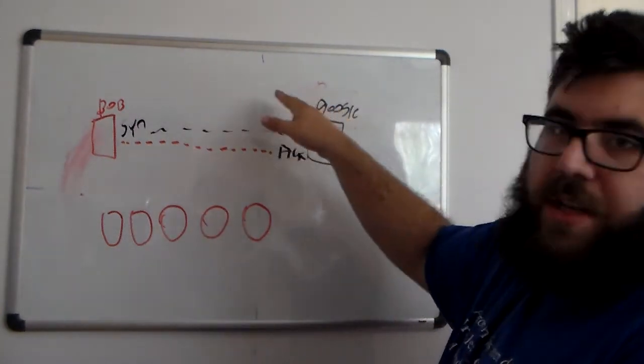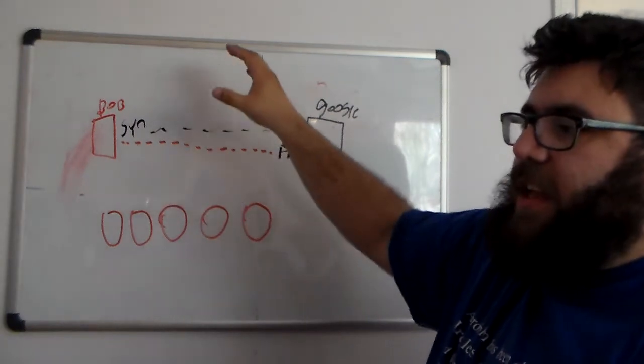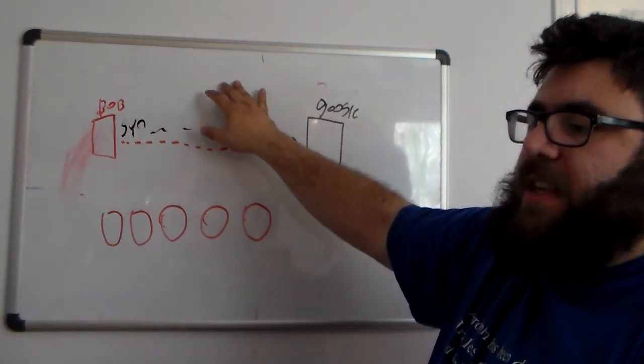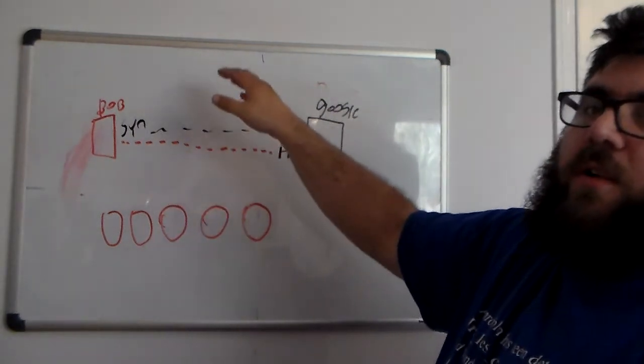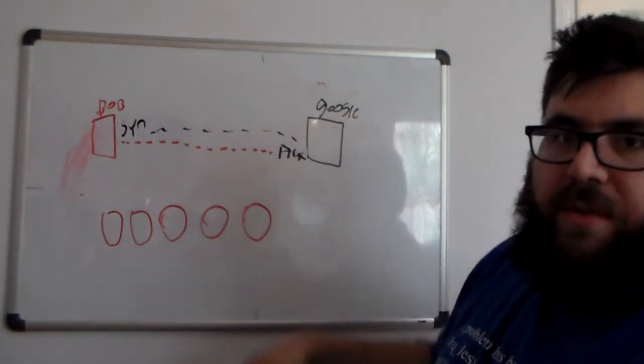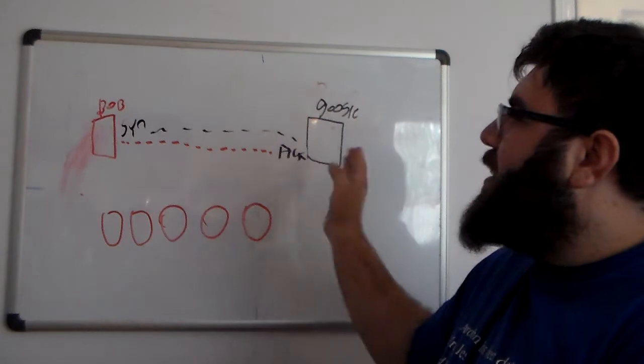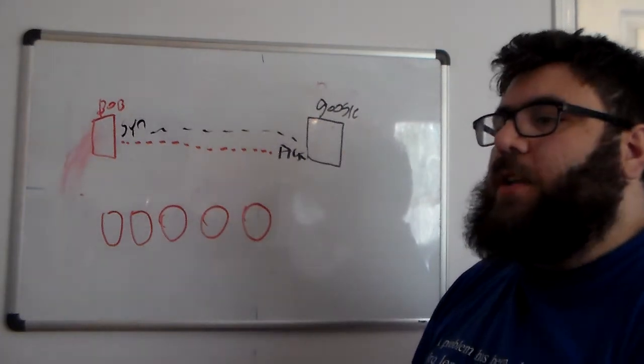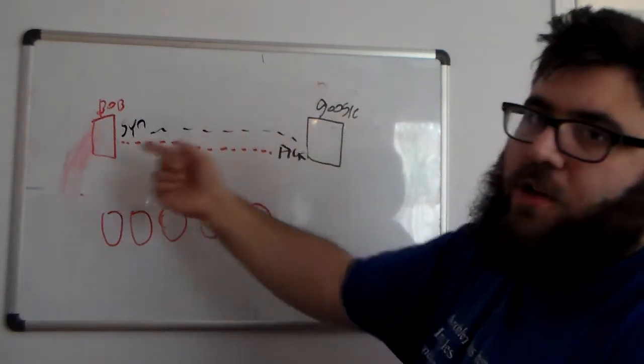Now, in a DDoS solution, no matter what you're using, if you're using things like Cloudflare, or Cisco, or Arbor, or DOS arrest, when they see this type of traffic, they'll usually send what is known as a SIN cookie.